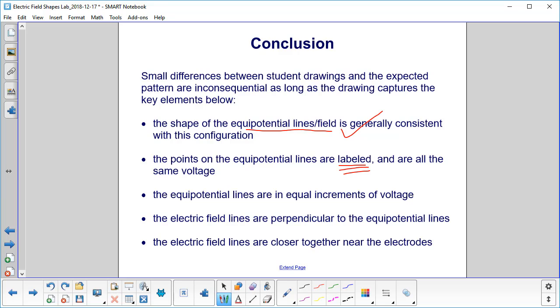You have to label and are all the same voltage. The equipotential lines are in equal increments of voltage.